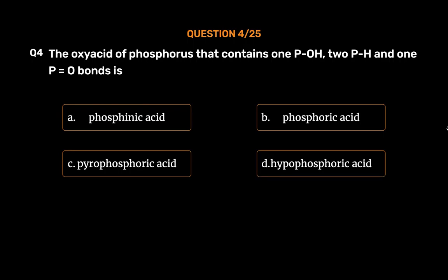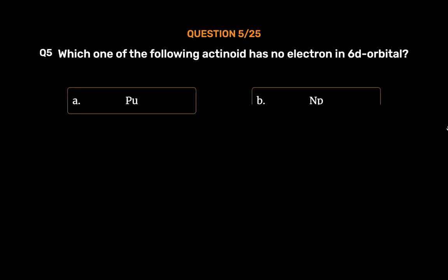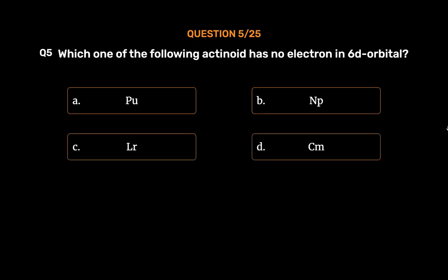The correct answer is Option A, phosphenic acid. Question number 5. Which one of the following actinoids has no electron in the 6d orbital? Option A, Th; Option B, Np; Option C, Lr; Option D, Cm.